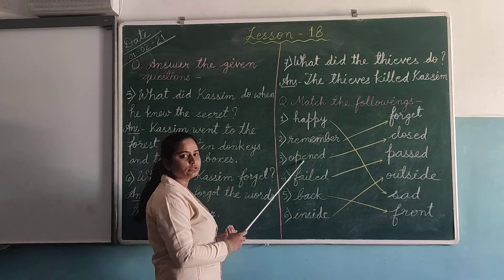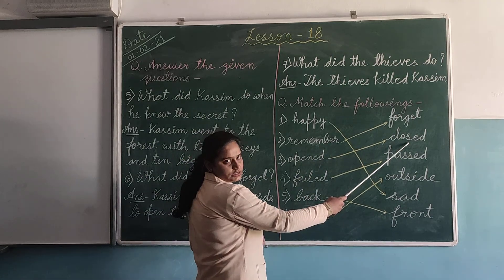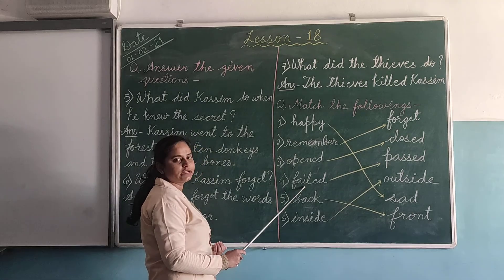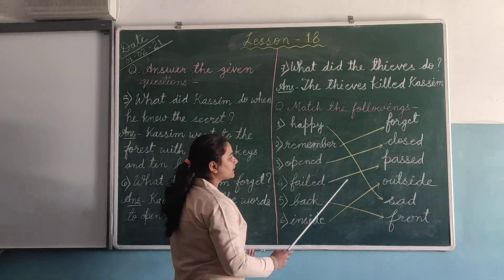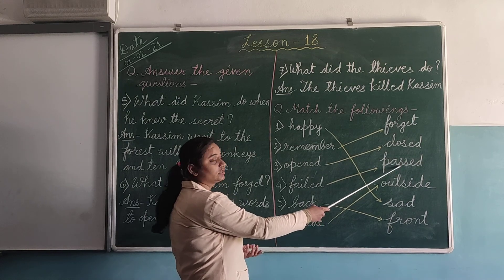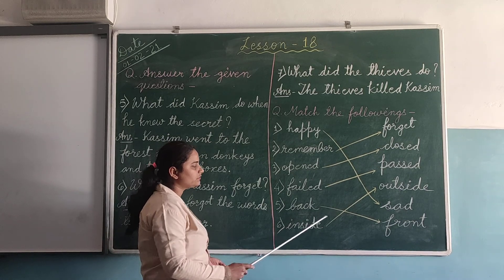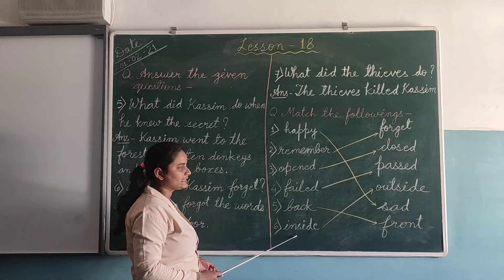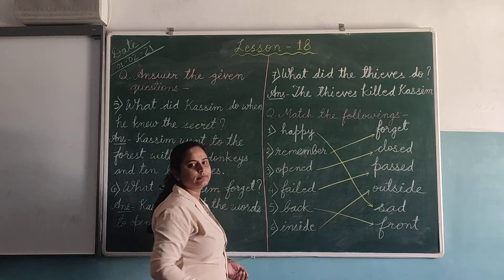The third word is open. The opposite of open is closed. The fourth word is fail — fail means unsuccessful. The opposite is successful. Next, back — the opposite word is front. And inside — the opposite word is outside.